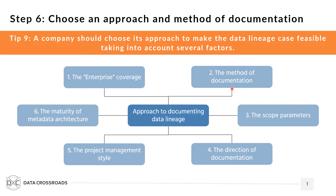The second factor is the method of data lineage documentation. There are two key methods: descriptive and automated. These two methods can be combined. The method depends on the layers of documentation — the descriptive method is applicable to data lineage at the business conceptual and logical level, while the automated method is highly recommended for the physical level.